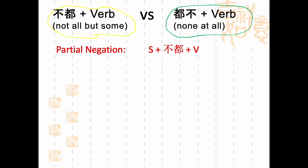For a partial negation, the structure is: subject followed by 不都, then the verb. 都 is an adverb, so it comes before the verb. Let's practice. 中文怎么说？Not all of us are teachers. We could say 我们不都是老师 — so maybe one of us is a teacher, but the others are not.